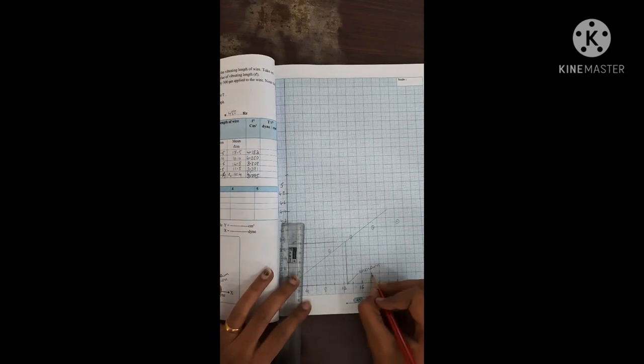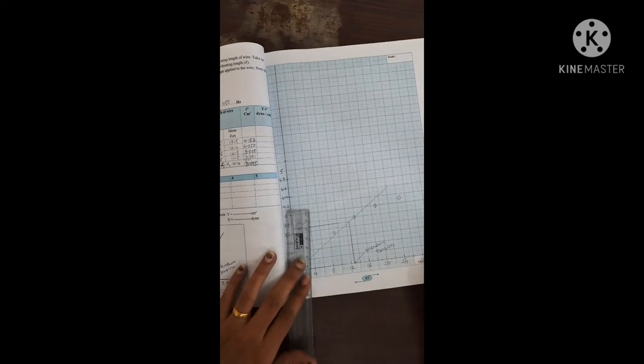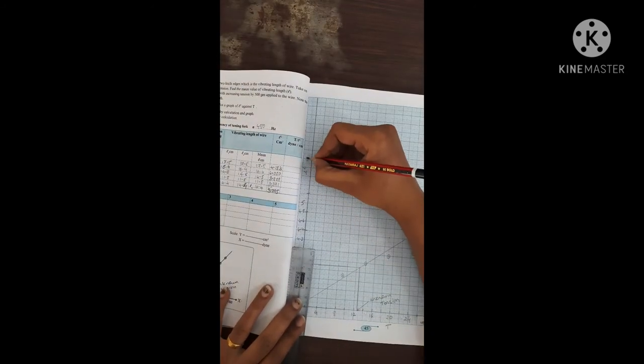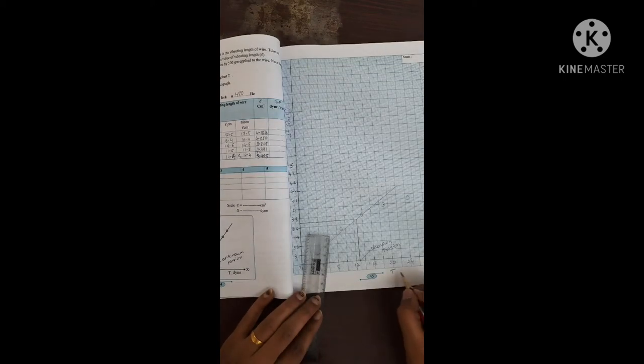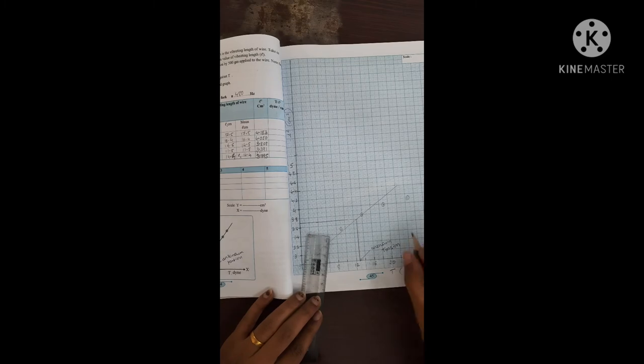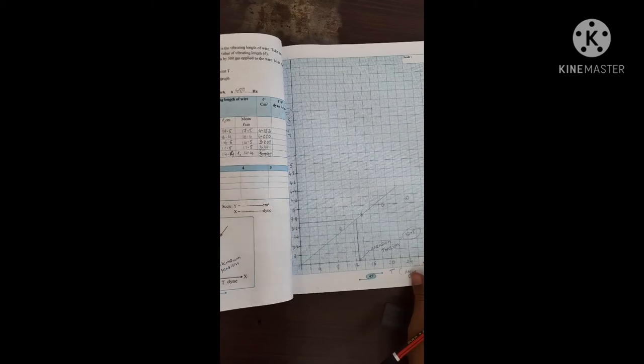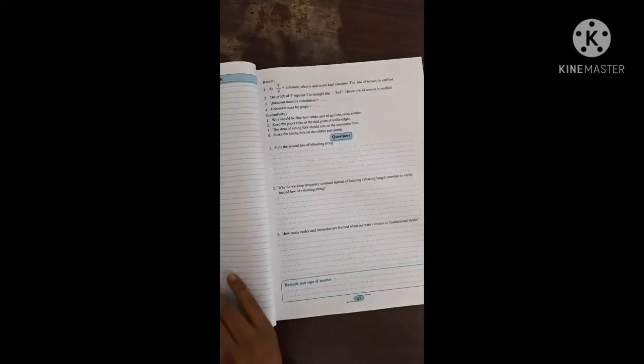This unknown tension is into 10 to the power 5. This is tension and this is about l square, that is centimeter square. And this is tension which is in dyne. How much it is? 12.8. So this much is your answer. 12.8 dyne.